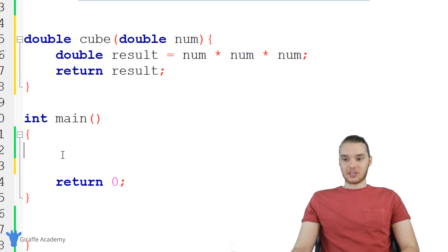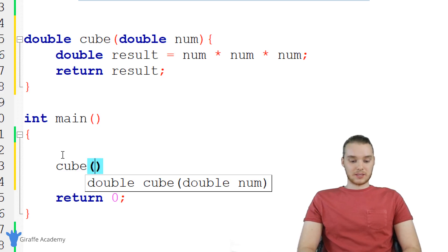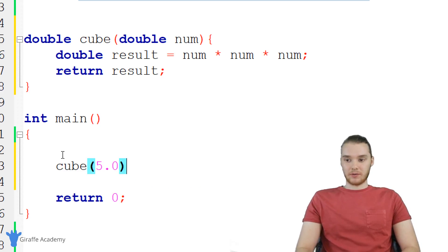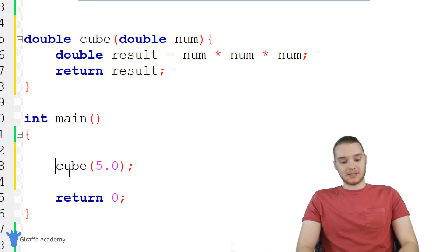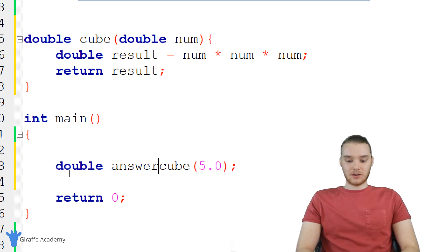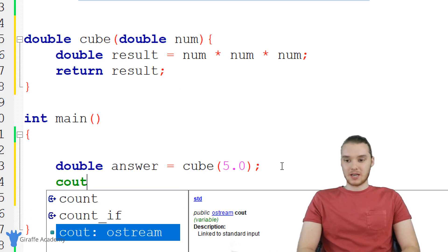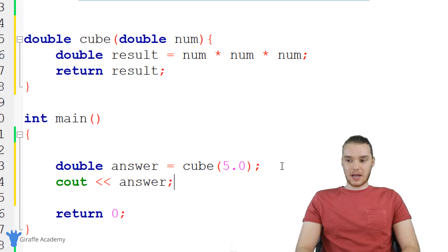Now down here in my main function, I can actually call this function. So I could say cube and I can pass a double, let's say like 5.0, right? Now actually, what's going to happen is when we call cube and we pass it this information, it's actually going to get a value back. So if I wanted, I could basically say double answer is equal to cube 5.0. And now the value that gets returned back from this cube function is going to get stored inside of this answer variable. So let me show you guys, I can say C out, and I'm just going to print out answer.